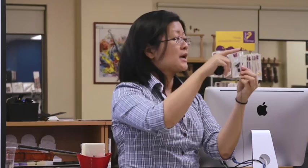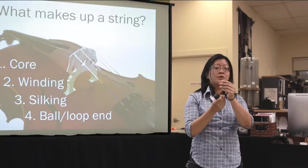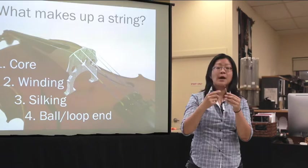Now the ball end, if you next time you take a look at your strings, if you look very closely at the ball end, you'll notice that it is the anchor for our core material. So the core material is wrapped around it or it's wound right through it.